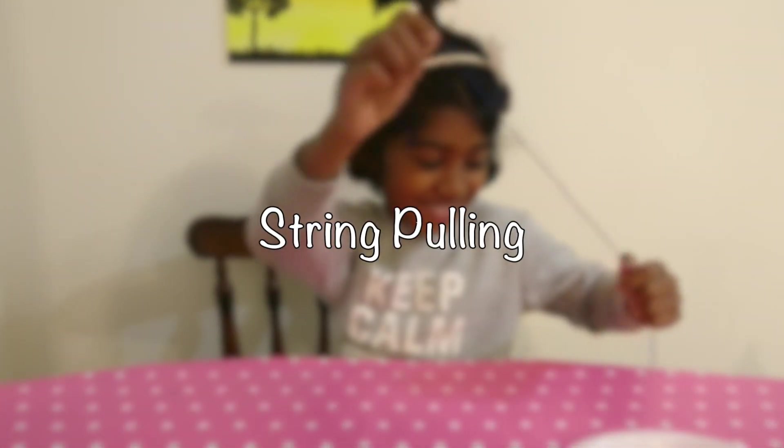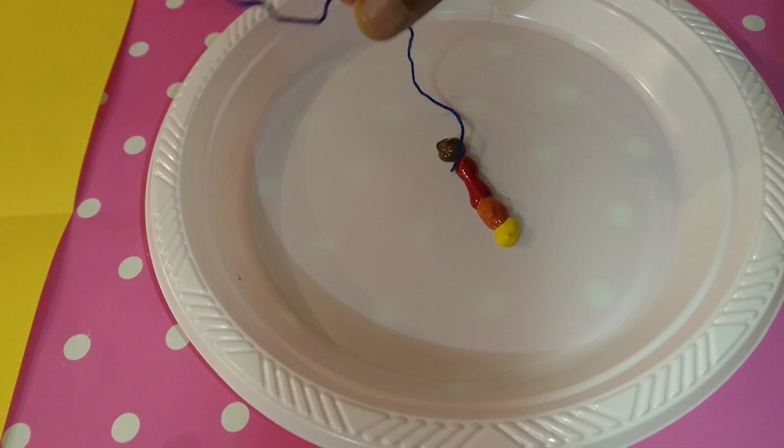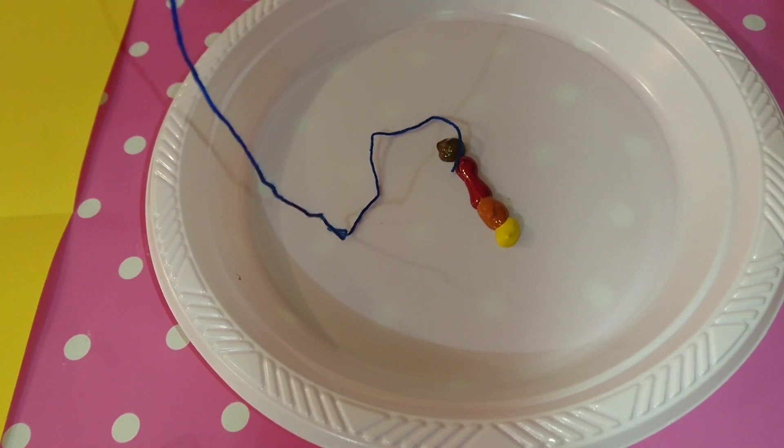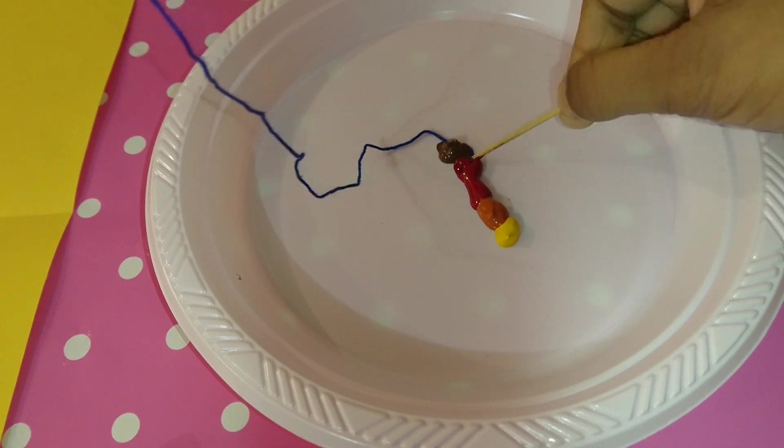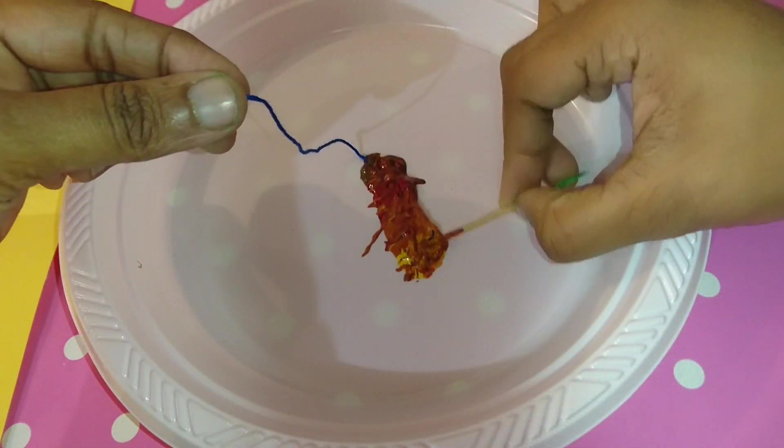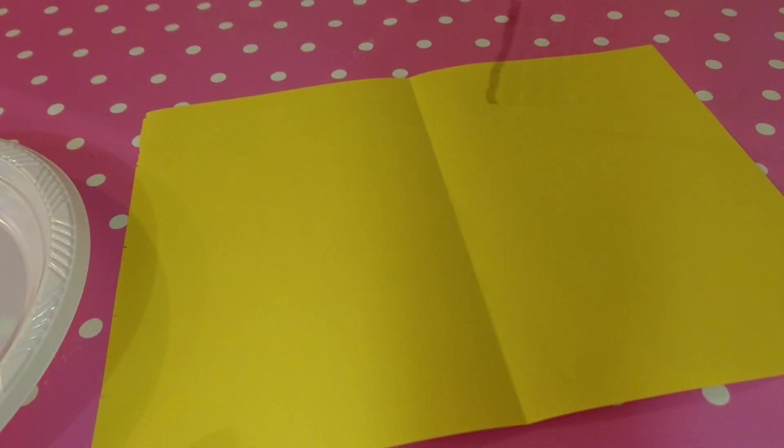Next, we are trying string pulling. Kids can make unique works of art by dipping string into paint and making pulled string art. Here I am submerging a piece of string into different colors of paint, leaving one end of the string to hold onto. Then placing it onto one side of a folded paper.